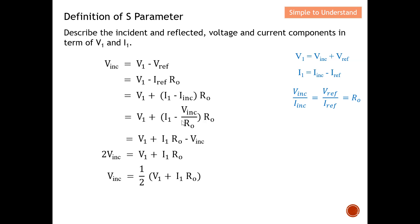Multiplying through by R0 — the R0 terms cancel — I obtain an equation with the incident voltage appearing twice. Shifting one V_incident term to the left gives 2·V_incident on one side. Dividing by two, I have successfully expressed the incident voltage in terms of V1 and I1: V_incident = (V1 + I1·R0) / 2.